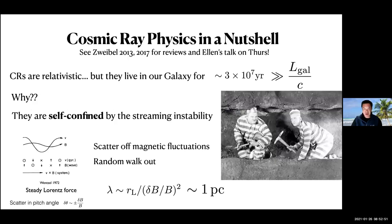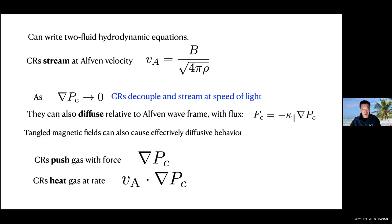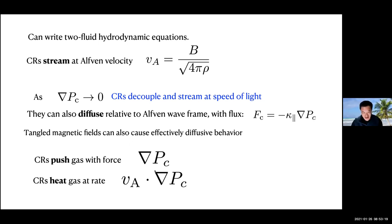Cosmic rays make kinks in the magnetic field and scatter off them, resulting in a short mean free path. With a short mean free path, you can consider them as a fluid and write down fluid equations. What you care about is that they push on the gas — that's the gradient of cosmic ray pressure — and they also heat the gas. This is intuitive: just like thermal pressure, you have a gradient of cosmic ray pressure, and heating is just velocity times that force — the rate of work done. You can hold your own in a cocktail party conversation.